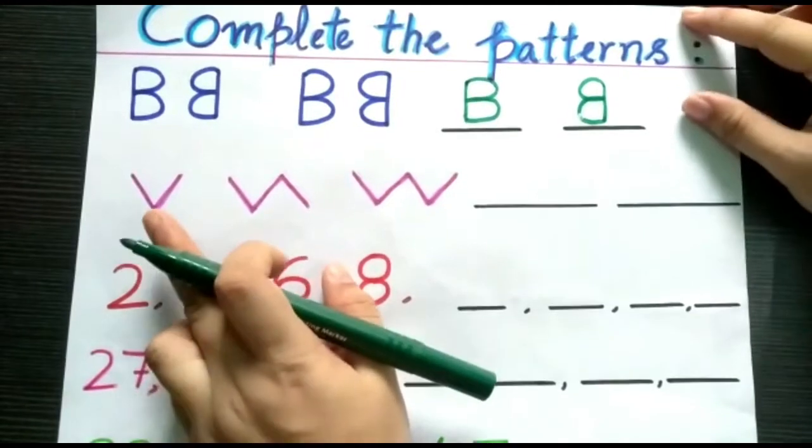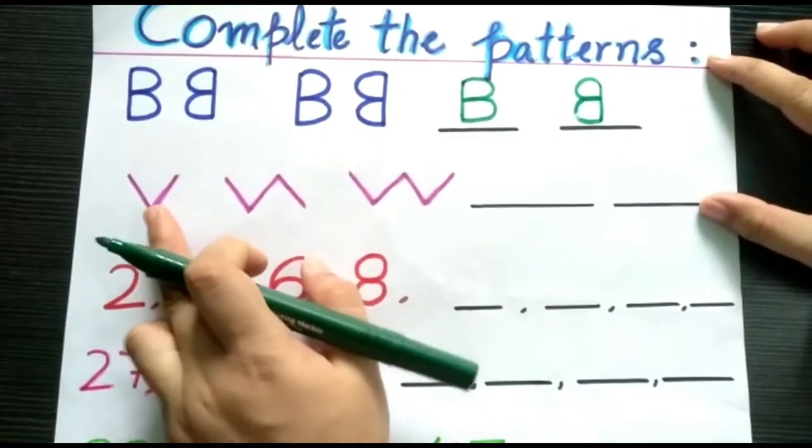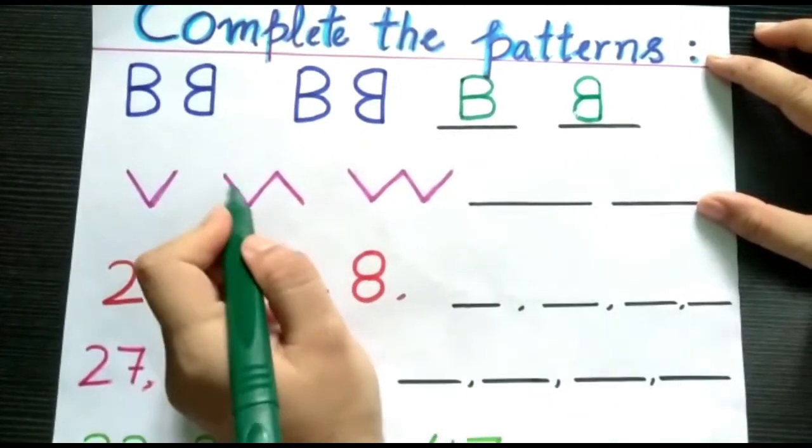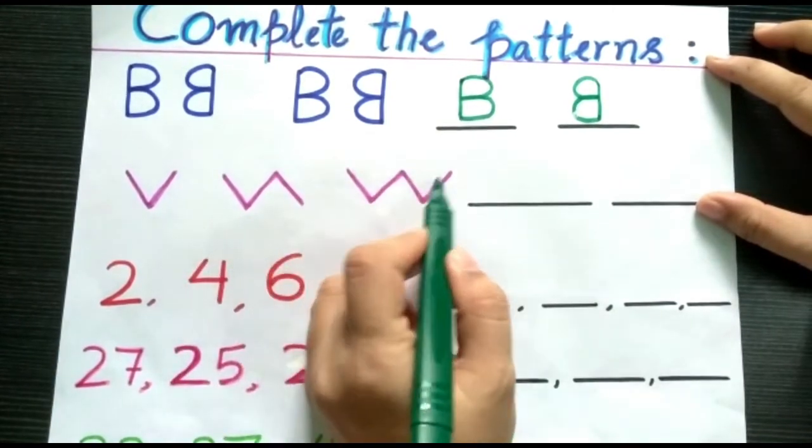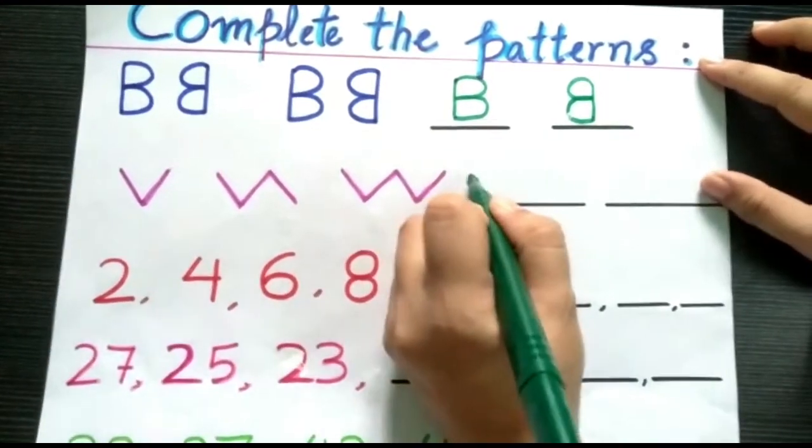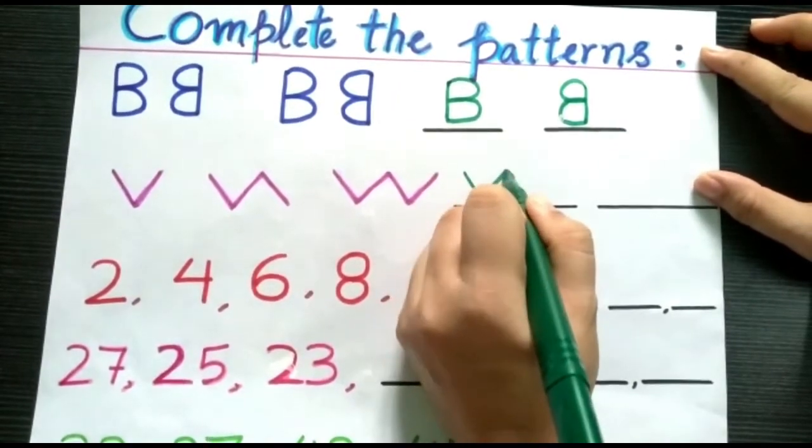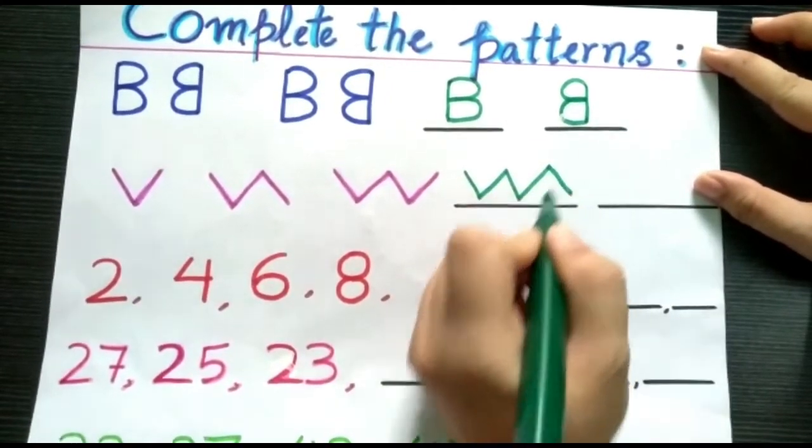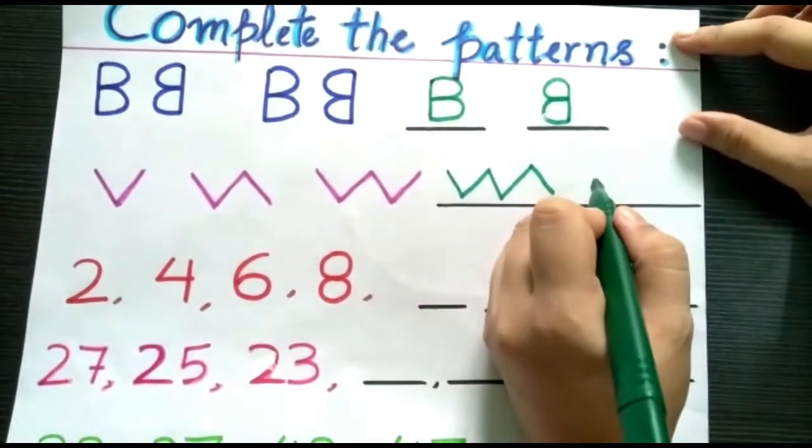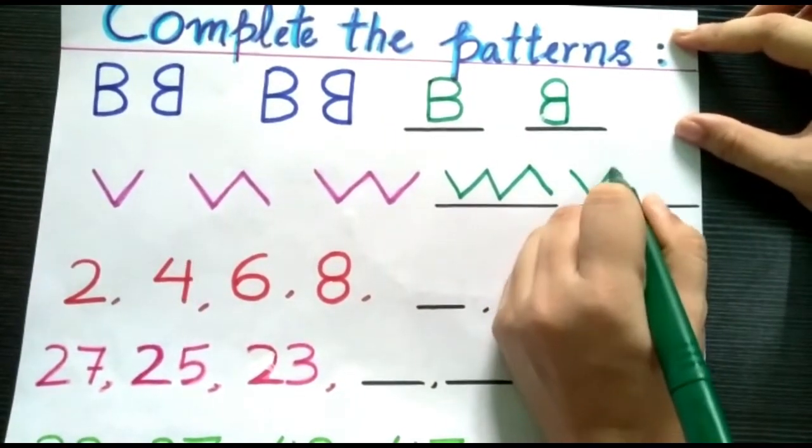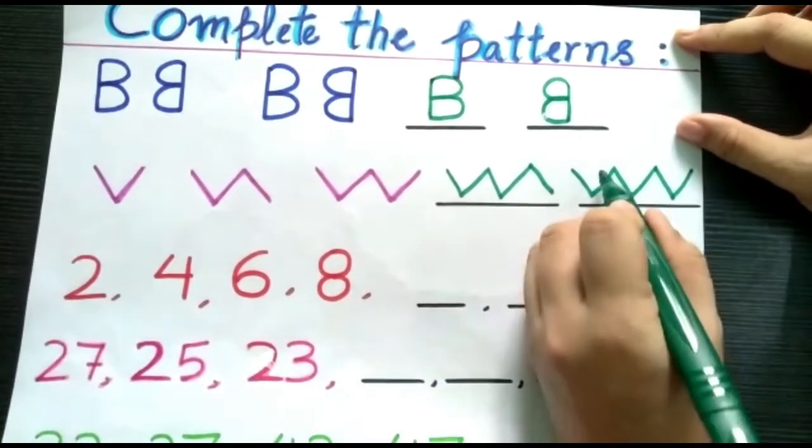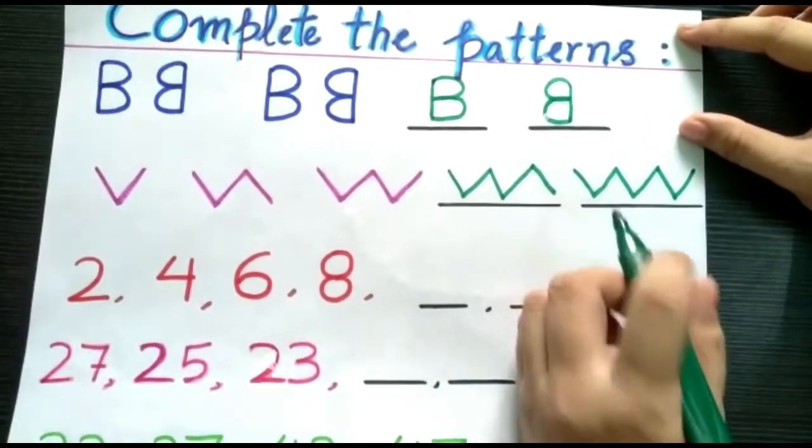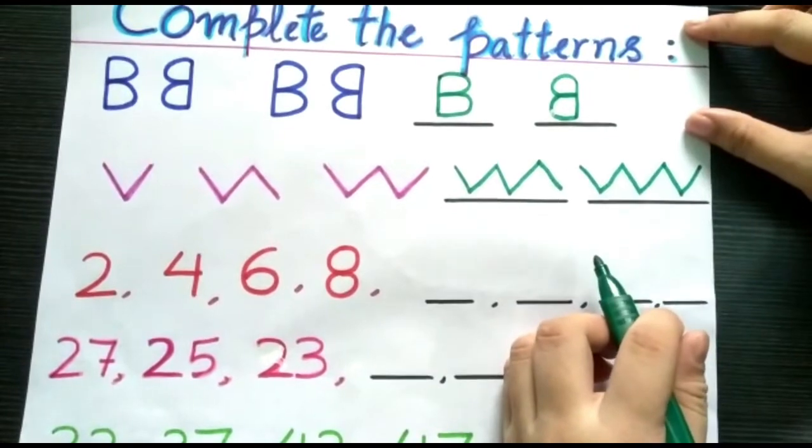Next, we have V, then V with a slanting line. Next, we have 2 V. Next, we will write 2 V's, 1, 2 V's with a slanting line. Next, pattern will be followed by 3 V's. 3 V's, 1, 2, 3. So children, that's how the pattern follows.